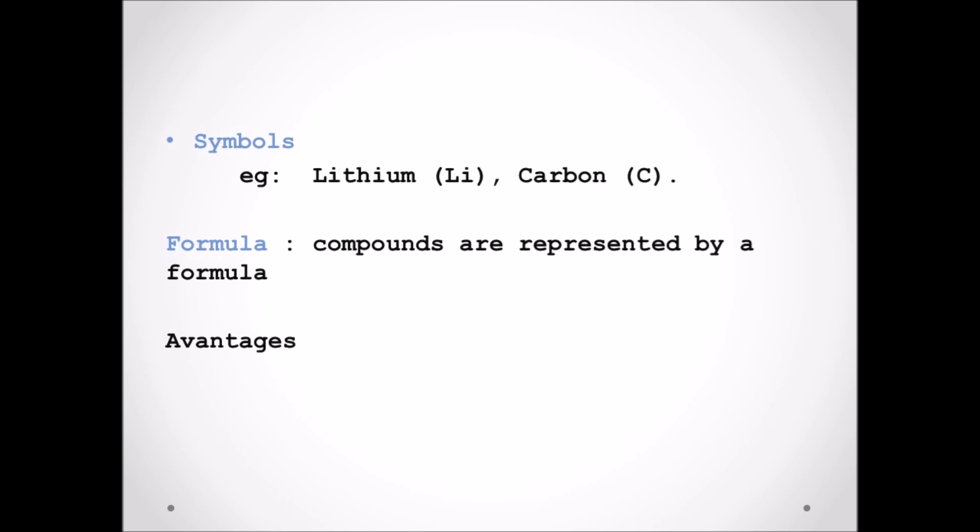Next, formula. When two or more elements combine together they form a compound and then they can be represented by a formula. It has its advantages: it shows the number of atoms in the compound and also what type of atoms are present, and also it can indicate the mass of the compound.